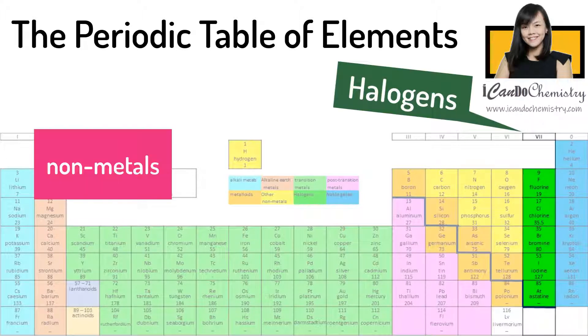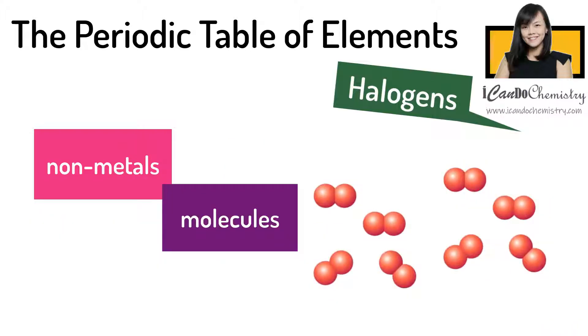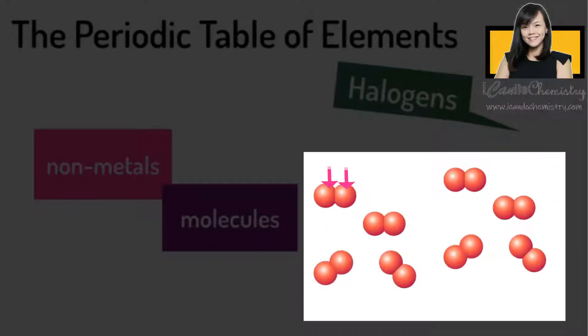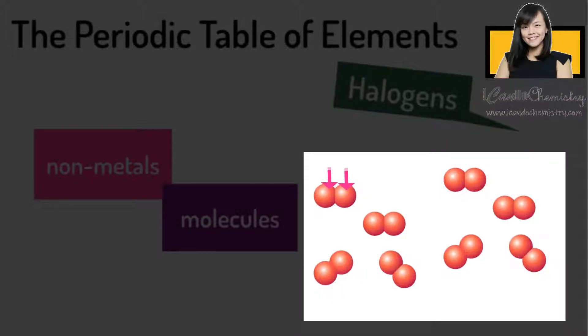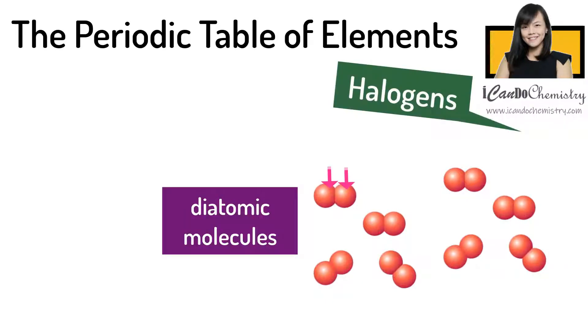Halogens are non-metals that exist as molecules. Each molecule is made of two atoms covalently bonded together. Hence, we call them diatomic molecules.